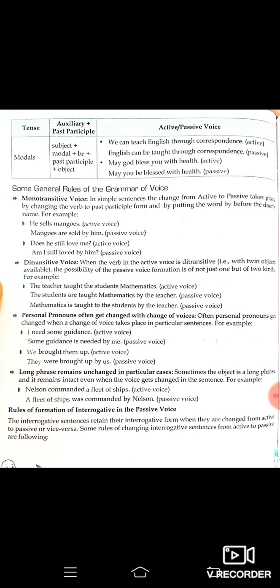'He sells mangoes' (active voice) becomes 'Mangoes are sold by him' (passive). 'Does he still love me?' (active voice) becomes 'Am I still loved by him?' (passive). When the verb in the active voice is ditransitive — meaning two objects are available — the possibility of passive formation is of not just one but two kinds. For example: 'The teacher taught the students mathematics' becomes 'The students are taught mathematics by the teacher.'